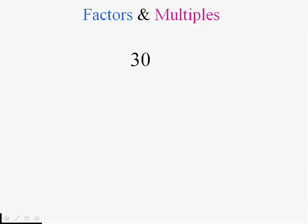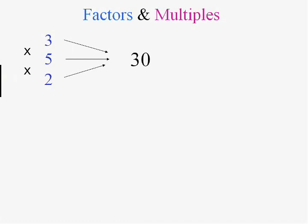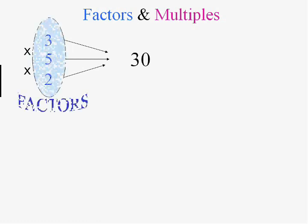A factor of a number — for instance, 3 is a factor of 30. It goes in evenly to 30. 4 does not go in evenly to 30, so it's not a factor. 5 is a factor of 30, goes in evenly. 2 is a factor of 30. Usually the factors are smaller than that number because they have to go into it. So those are the factors.